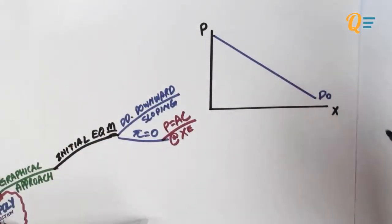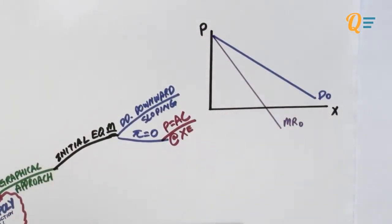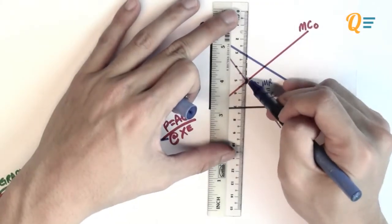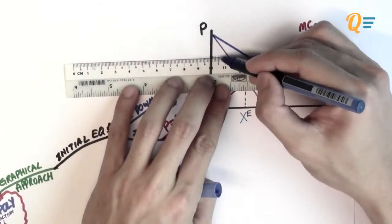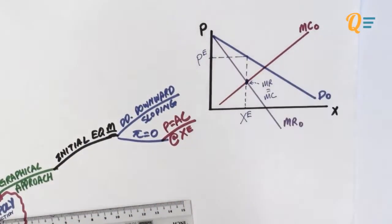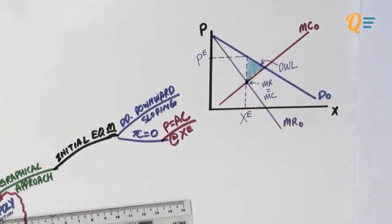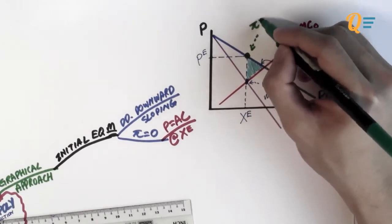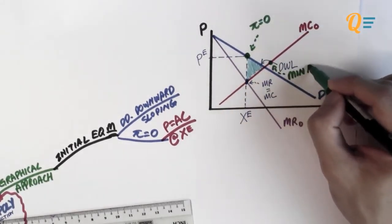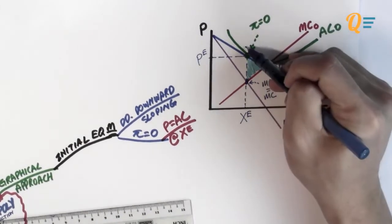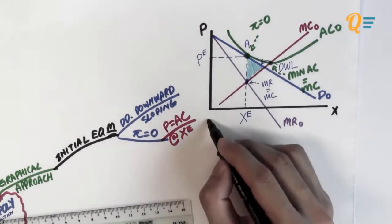Let's draw the graph. This is your downward sloping demand curve, and with a downward sloping demand curve you will have a marginal revenue curve below it. Adding in the marginal cost curve and using the profit maximization rule MR equals MC, the firm produces at quantity XE and price PE determined from the demand curve. This area here is actually deadweight loss, showing that monopolistic competition is not an efficient market. I need my average cost to pass through PE at XE, with minimum AC cutting through the marginal cost curve — that gives us point A, the initial equilibrium.